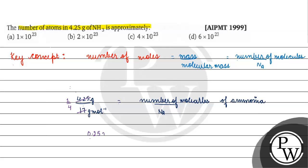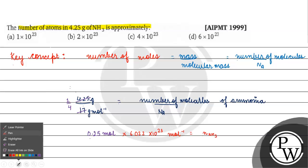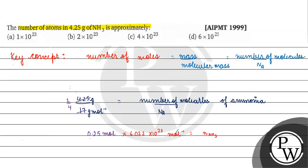This gives us 0.25 moles multiplied by Avogadro's number, which is 6.022 × 10^23 mol⁻¹. Solving this, the number of molecules of ammonia comes out to 1.5055 × 10^23.